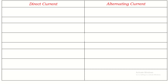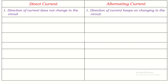Let's talk about the basic differences between direct current and alternating current. The direction of current does not change in the circuit in the case of direct current, whereas in alternating current, the direction of current keeps on changing in the circuit.